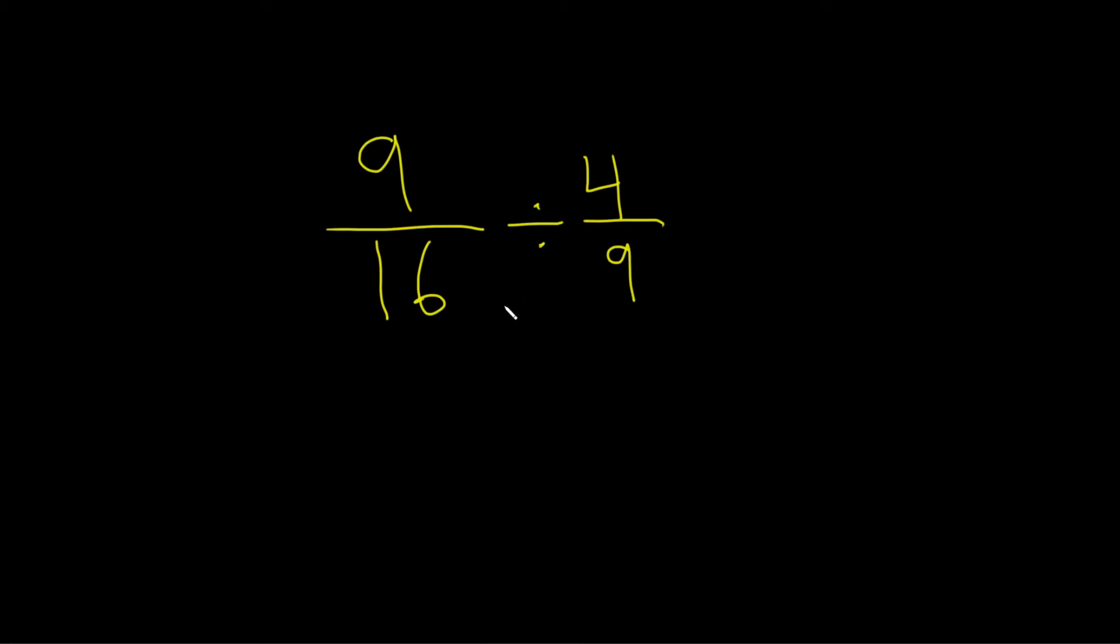9 over 16 divided by 4 over 9. So this is a division problem. Whenever you have a division problem, the first thing you want to do is rewrite it as a multiplication problem. Division is the same thing as multiplication by the reciprocal.